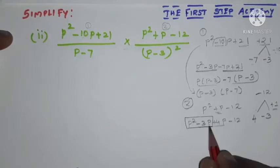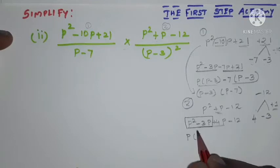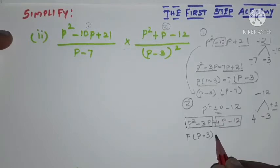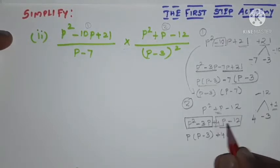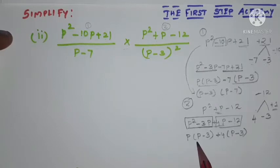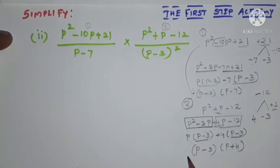In the first two terms, p is common, so taking p outside gives p(p minus 3). In the last two terms, plus 4 is common, giving plus 4(p minus 3). Now p minus 3 is common in both terms, so taking it outside: (p minus 3)(p plus 4). These are the two factors of polynomial 2.